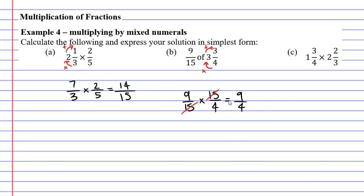Let's convert this to a mixed numeral. How many 4s fit into 9? Two of them with a remainder of 1 and our denominator stays the same it stays as 4. Our solution to question B is 2 and a quarter.